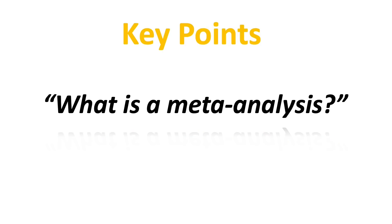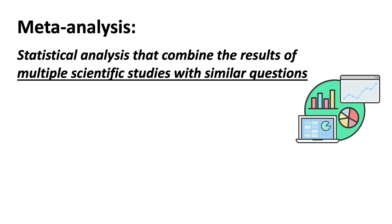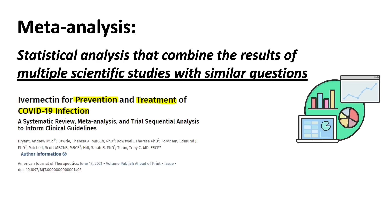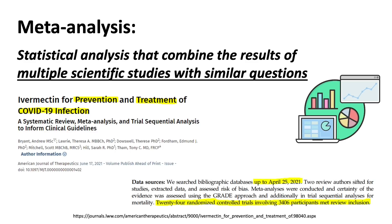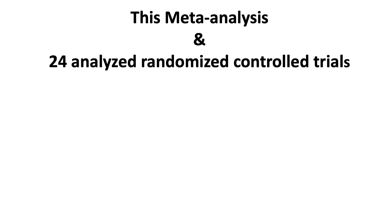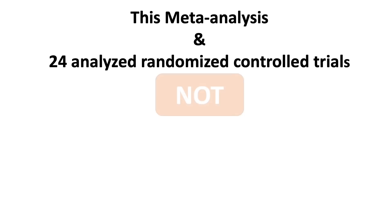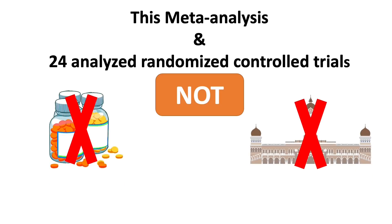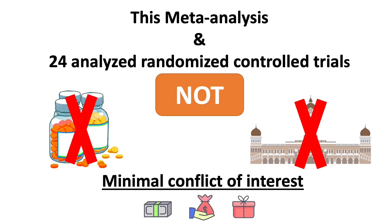First, let's look at a few key points before we go any further. Meta-analysis is a statistical analysis that combines the results of multiple scientific studies that address similar questions. For this paper, the authors looked at how ivermectin performed in the treatment and prevention of COVID-19. It analyzed 24 randomized controlled clinical trials with 3,406 participants, with data up to April 25, 2021. All of the analyzed clinical trials and this meta-analysis were not sponsored or conducted by the pharmaceutical industry and the government — they were all done by physician doctors. This implies minimum conflict of interest.